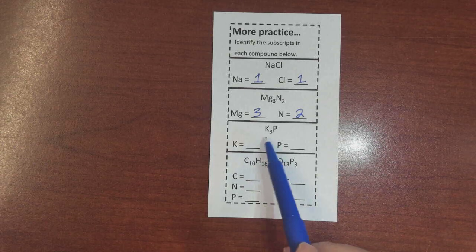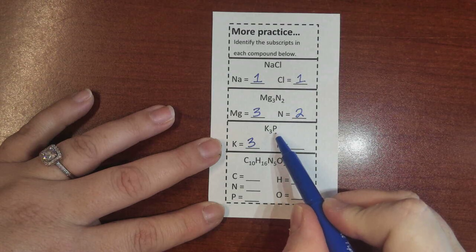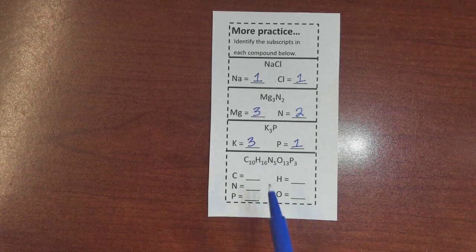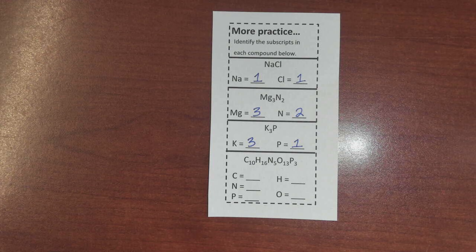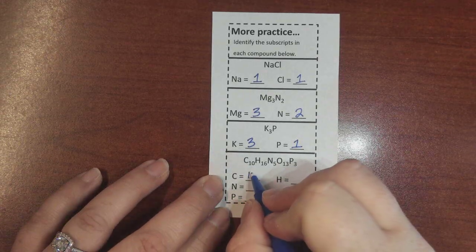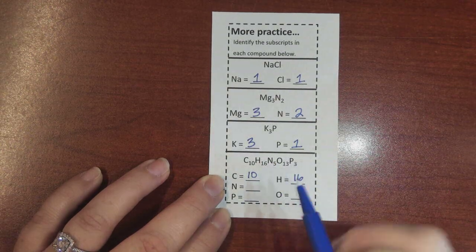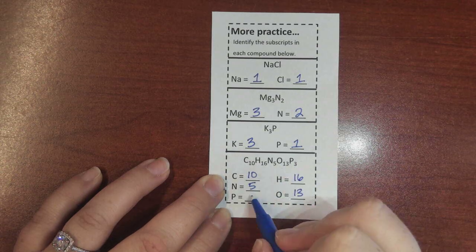For K3P, the subscript for K is three and for P there's no number, so it's just one. The bottom compound is a much longer chemical formula — this is where counting dots in a diagram wouldn't be efficient. Using the subscripts: C is 10, H is 16, N is 5, O is 13, and P is 3.